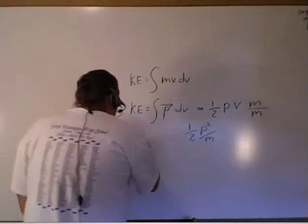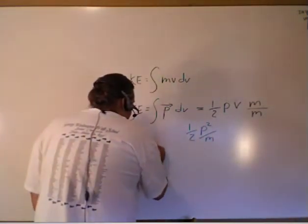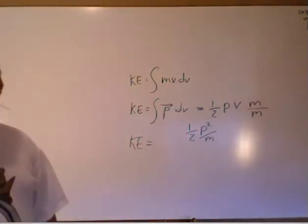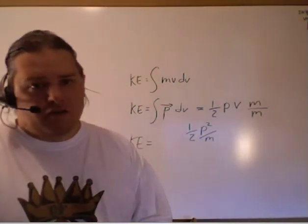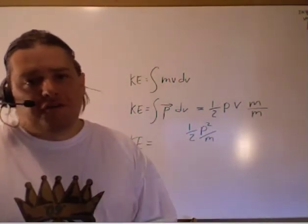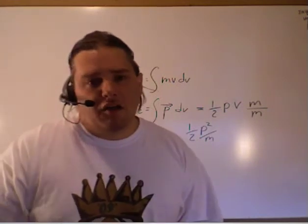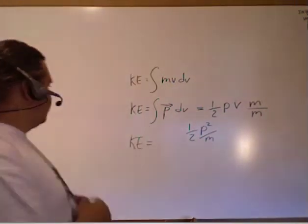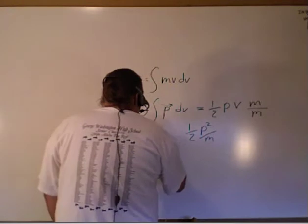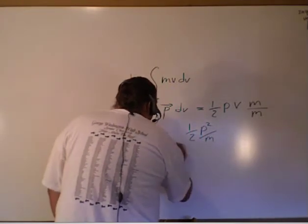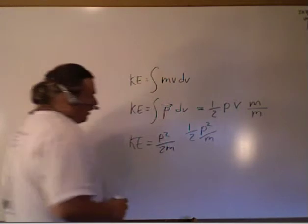So another way of expressing kinetic energy, and we don't really do this as much in the classical models, but we will do that certainly when we talk about quantum mechanics and light, is that we can say the energy of something is going to be p squared over 2m.